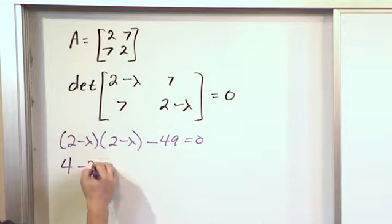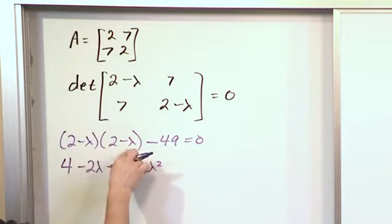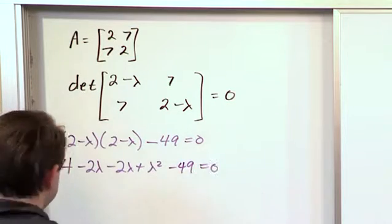This is going to give us 4 minus 2 lambda minus 2 lambda plus lambda squared. This guy gives us lambda squared minus 49 and that's equal to 0.